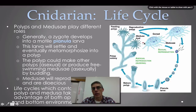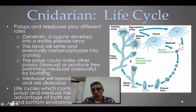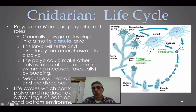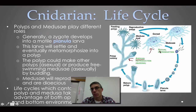When talking about Cnidarian life cycles, typically you're talking about a two-stage life cycle — the polyp stage and the Medusa stage. The polyp stage is typically involved in an asexual type of reproductive strategy, while the Medusa stage is normally involved in a sexual type of reproductive strategy.